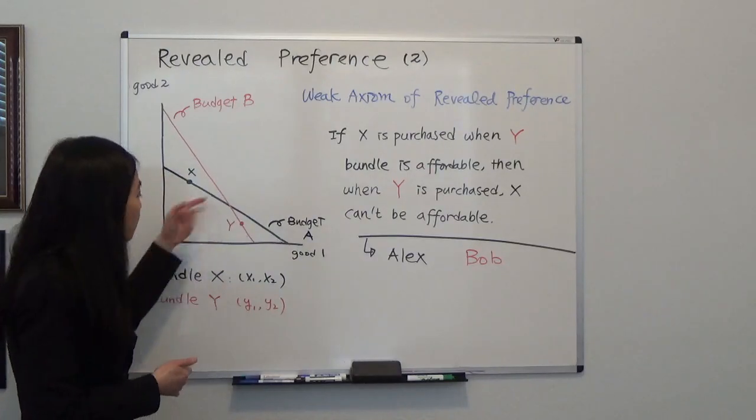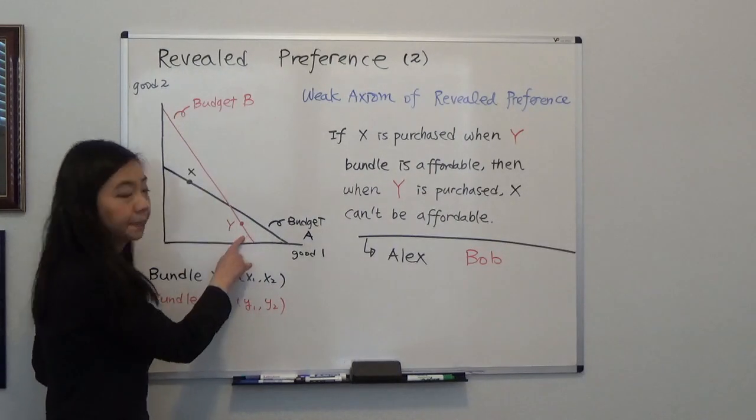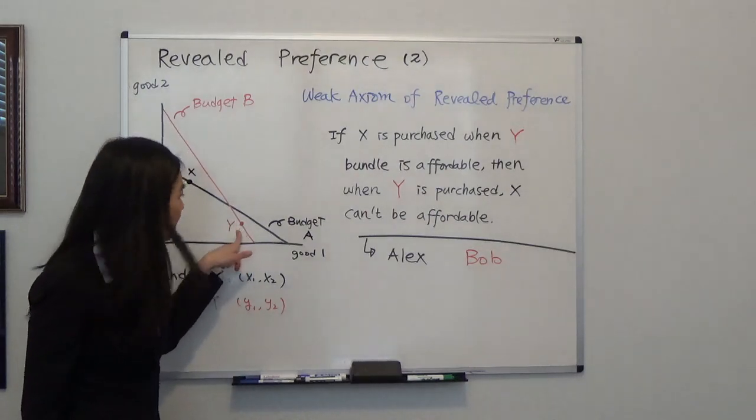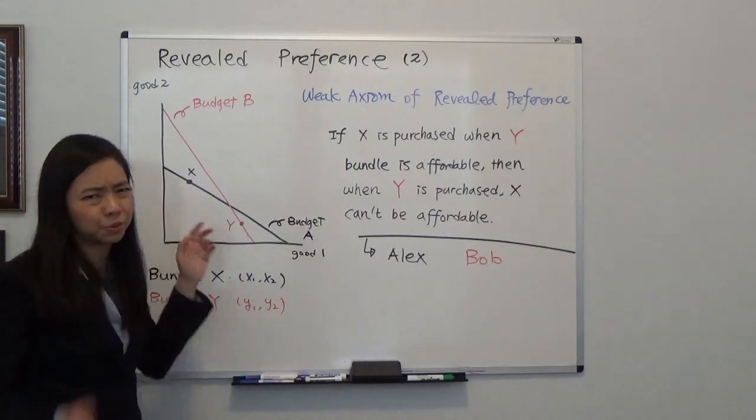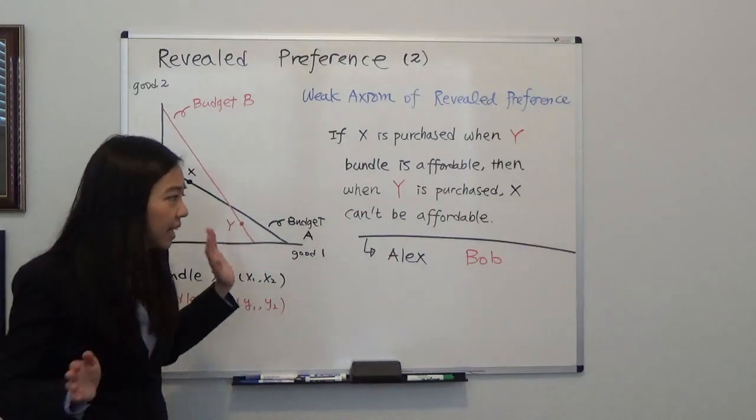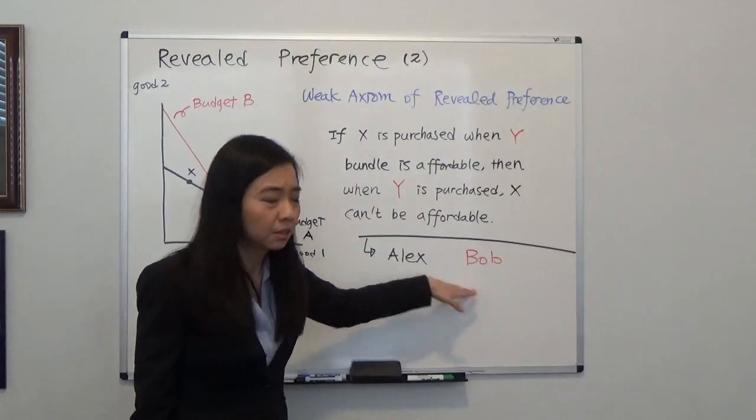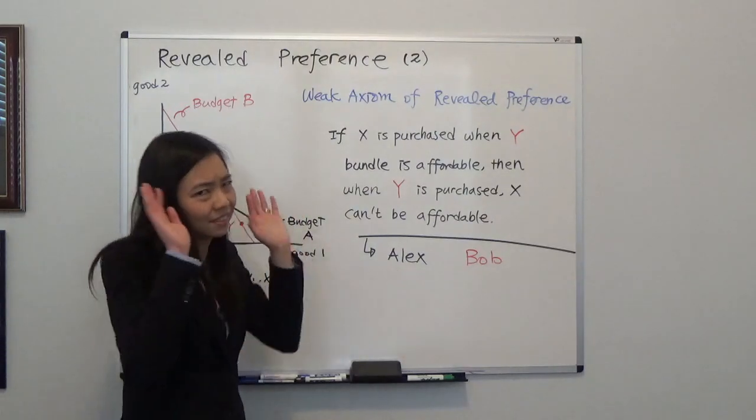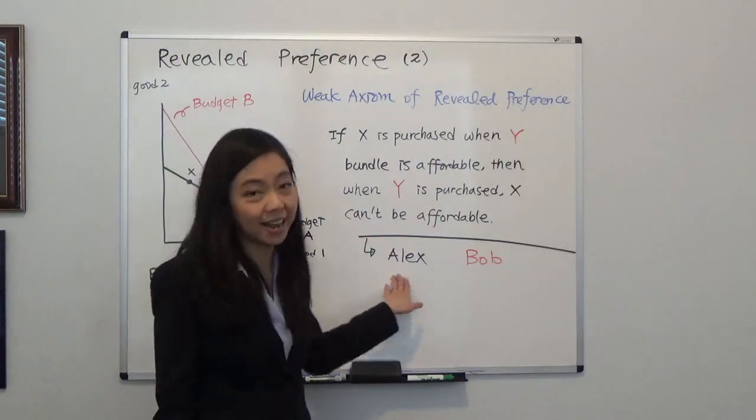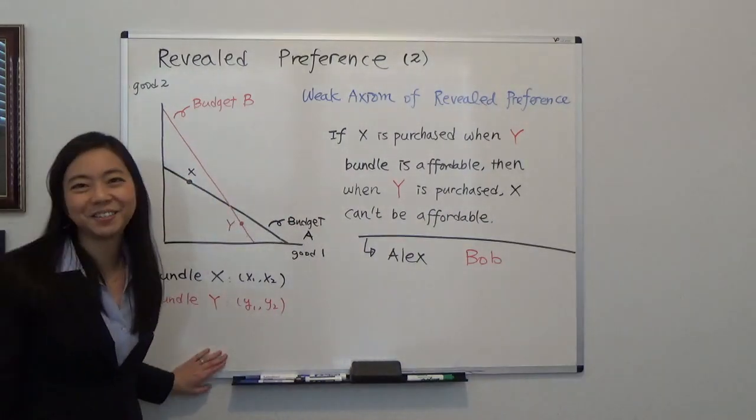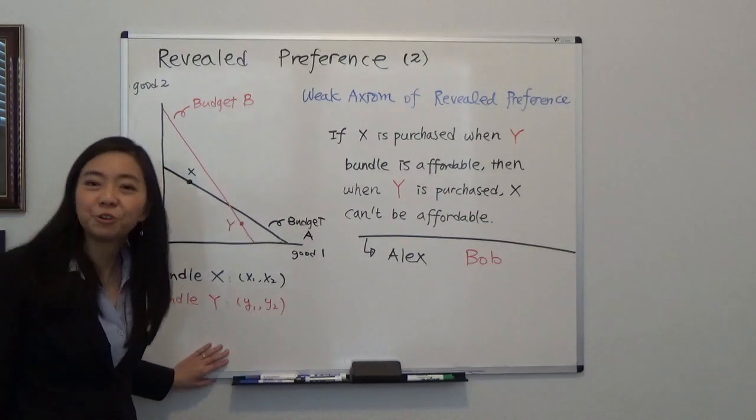And now in another budget, I see that, well, under budget line B, I see that you purchase bundle y. And at the same time, x is available. Wait, wait, wait. That doesn't add up. It's the same thing as you're going out to watch a movie with Bob when Alex is available. But that doesn't make sense if you actually prefer Alex to Bob, right? That shouldn't happen. So that's the idea of weak axiom of revealed preference.